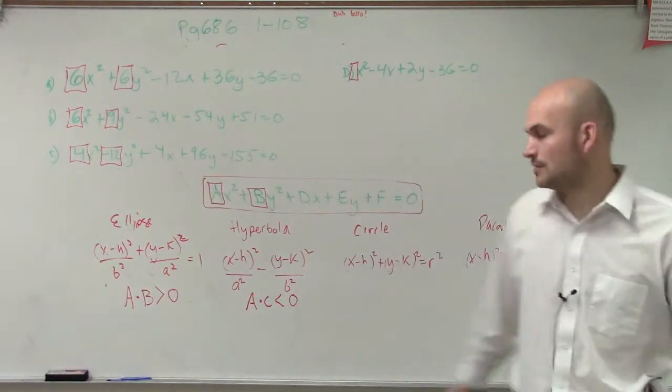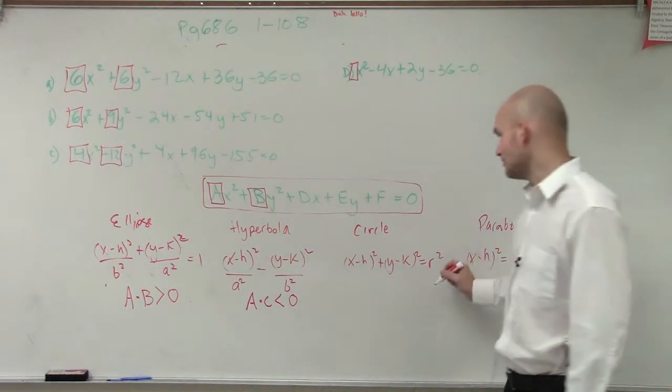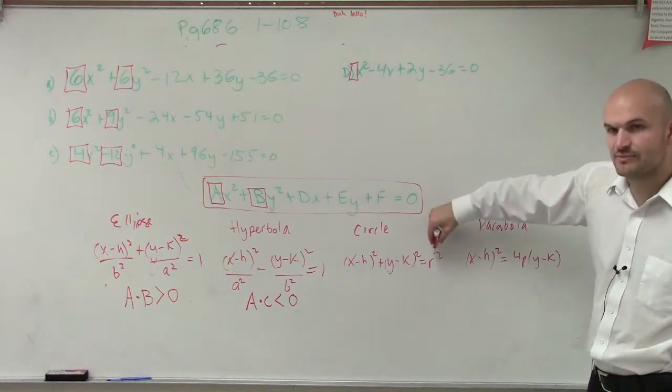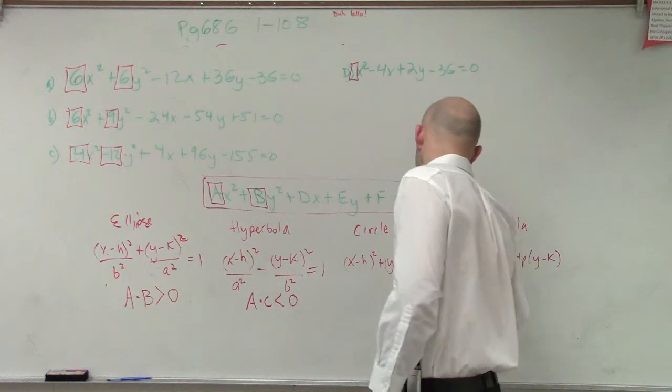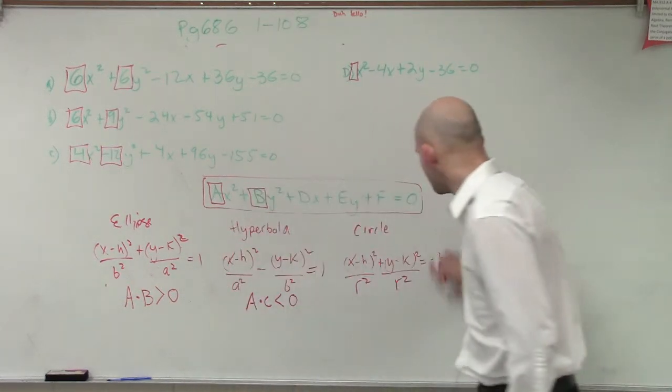All right. Now let's look at a circle. If we were to divide our circle, let's say we wanted this to equal 1, so we divide by R squared. Therefore, then this would now equal 1.